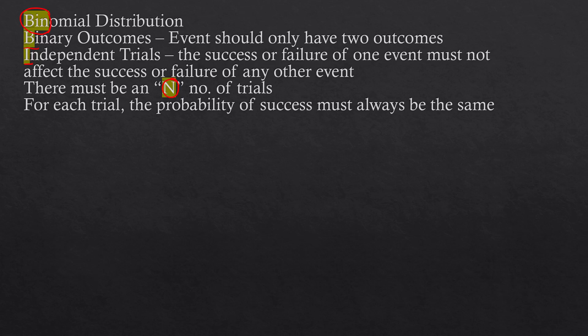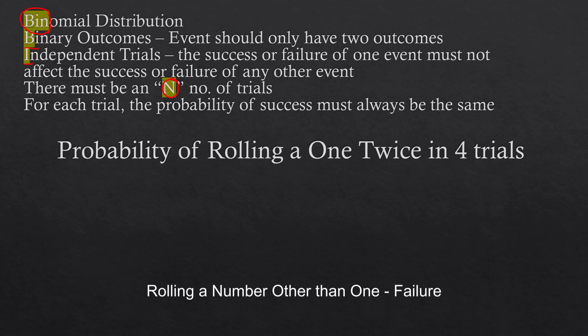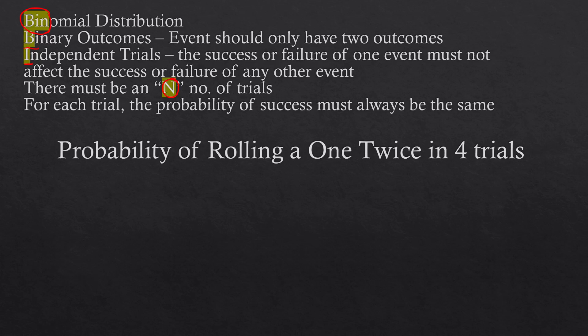Consider this example: the probability of rolling a 1 twice in 4 trials. For this situation, we only have two outcomes — either we roll a 1, which we'll consider a successful outcome, or we roll a number other than 1, such as 2, 3, 4, and so on, for each trial. Getting any number other than 1 is considered a failure.